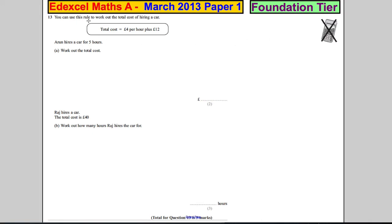Question 13. You can use this rule to work out the total cost of hiring a car. The total cost is £4 per hour plus £12, like some sort of deposit. So every hour is £4 and then you add £12 at the end.